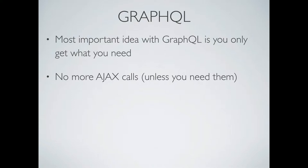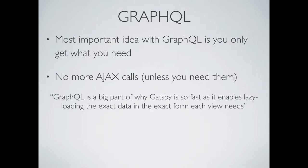If you have a Markdown plugin, a Drupal plugin, a Twitter plugin, all that gets put into one GraphQL schema. Then in your React components, you're writing a query for 'my blog posts' or 'my Twitter things' — it doesn't care that it originally came from Drupal or an API. It just knows it's now in this nice central GraphQL server. And GraphQL is a big part of why Gatsby is so fast — it fits into that PRPL pattern of getting only the data you need to render that component.